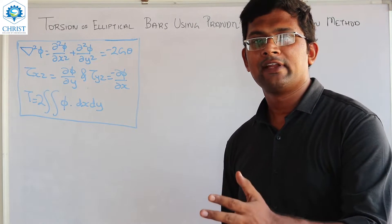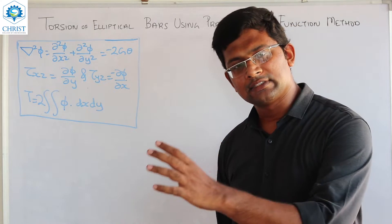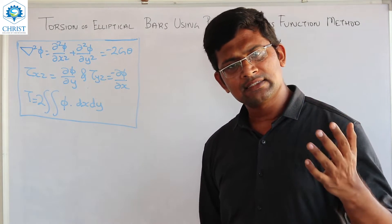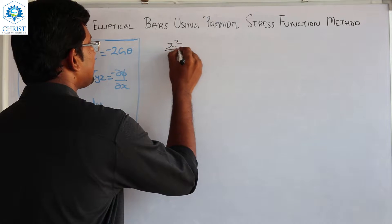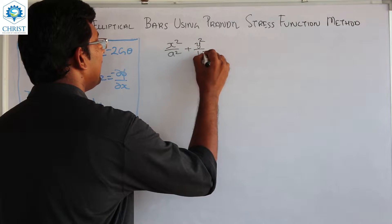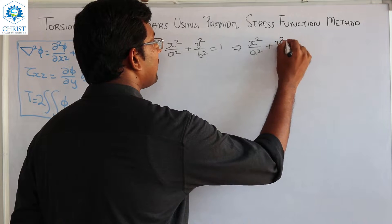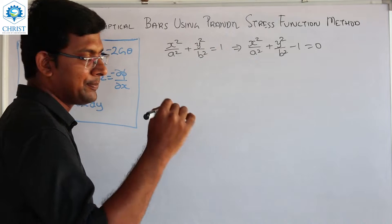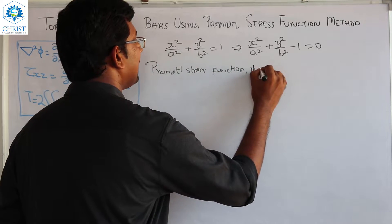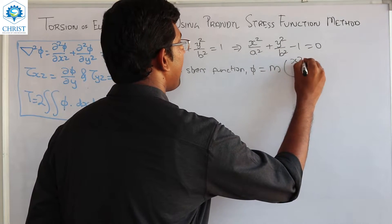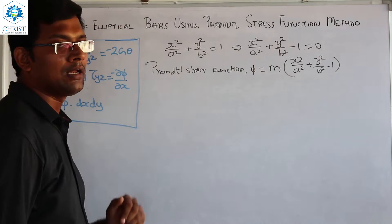Hi all, we are on the last topic of the Prandtl Seminars series on Prandtl Stress Function Methods. We are starting with the expression for an ellipse: x²/a² + y²/b² = 1. From that we can write x²/a² + y²/b² - 1 = 0. Now the Prandtl Stress Function φ is equal to m times (x²/a² + y²/b² - 1). This is the Prandtl Stress Function φ for an elliptical cross-section.